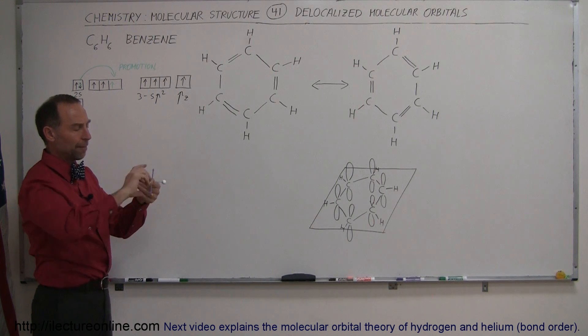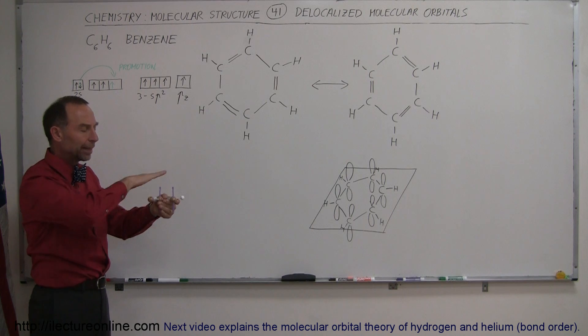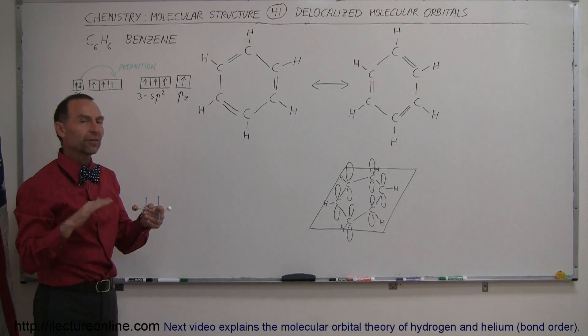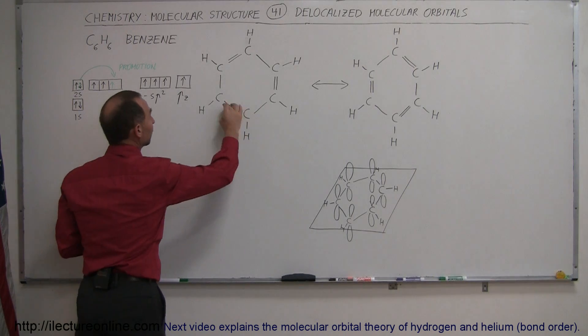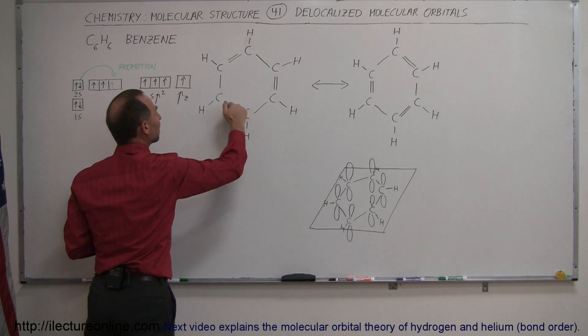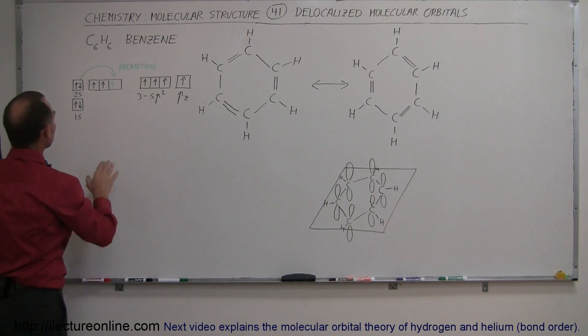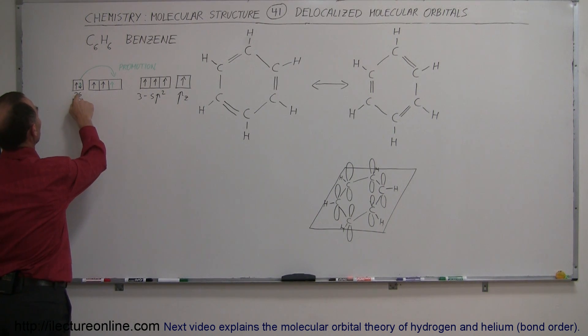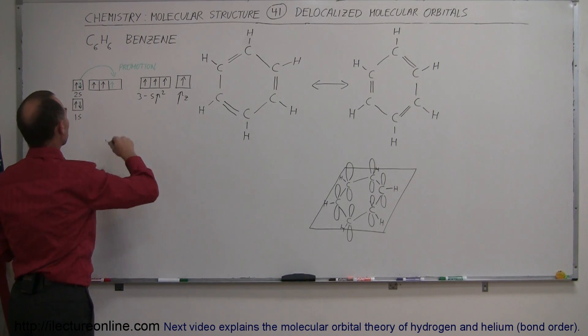Since carbon is the atom that basically forms the backbone of this molecule, let's take a look at carbon. Carbon has two electrons in the 1s orbital, two electrons in the 2s orbital, and two electrons in the 2p orbitals.